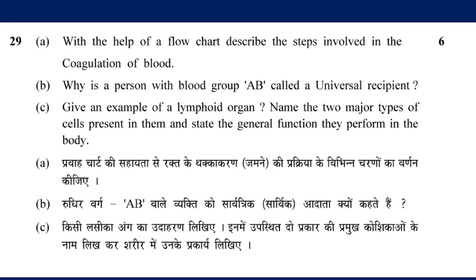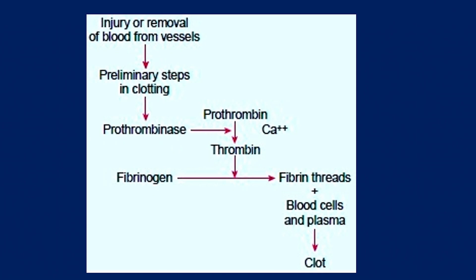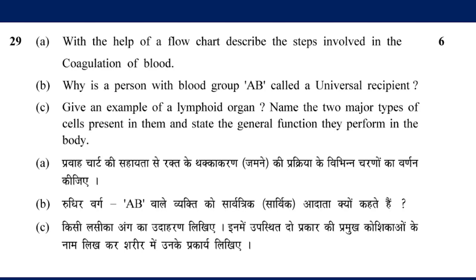With the help of a flow chart, describe the steps involved in the coagulation of blood. Why is a person with blood group AB called a universal recipient? The flow chart for blood coagulation is one question answer. AB is the universal recipient because AB blood group individuals can receive blood of all groups.